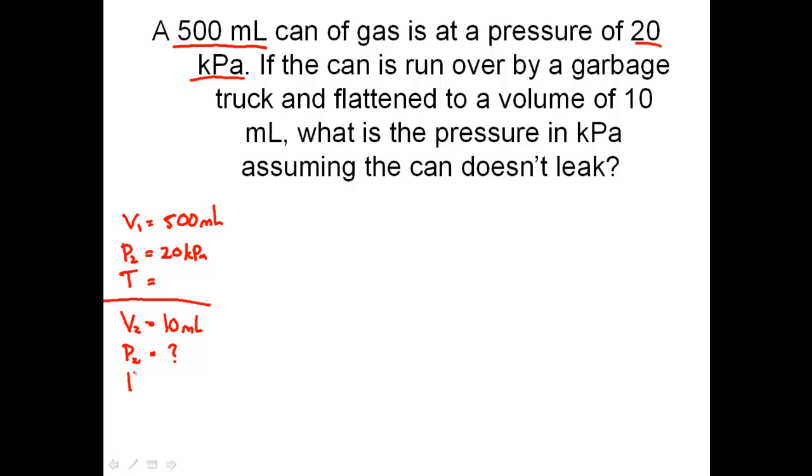Assume the can doesn't leak. So you'll notice here, once again, temperature is not used. Anytime temperature is not used, really what you're going to do is avoid it. You're not even going to put it in the equation. So my combined gas law simply says PV over T is going to be equal to the new PV divided by the temperature. But because temperature is not expressed here, what you're going to do is erase it and not even include it in the problem. Now, you do that whenever it is held constant or is not even mentioned.